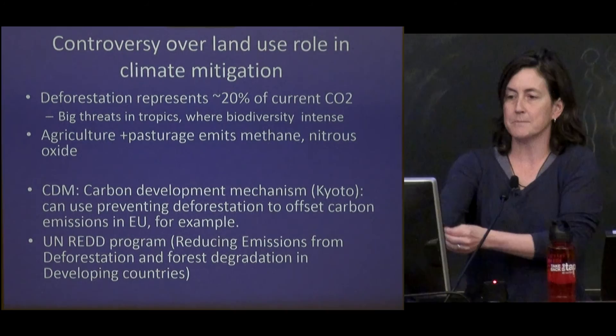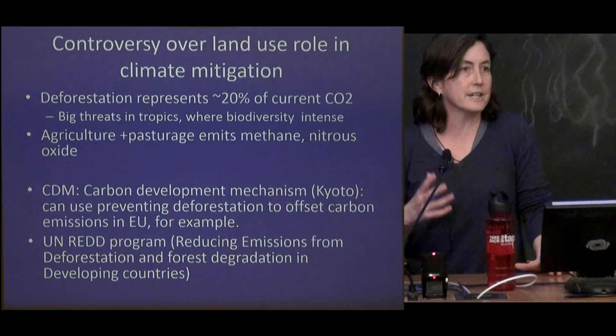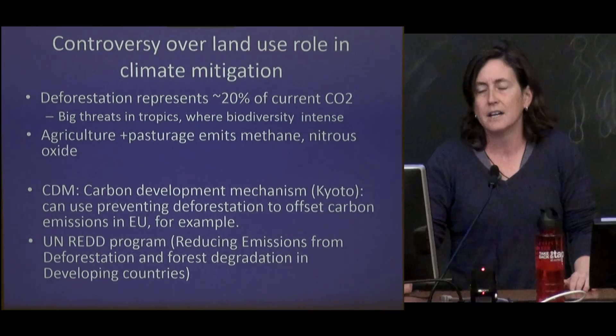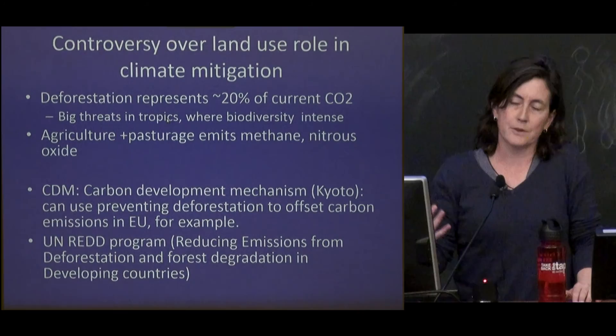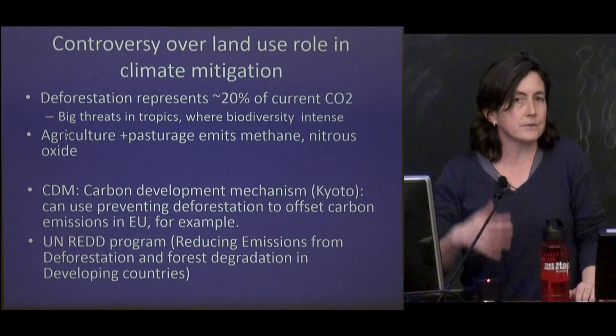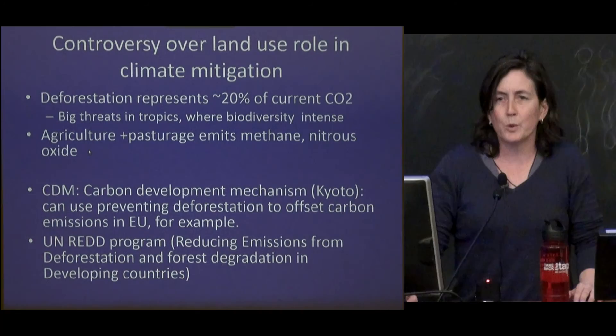Most of the time we think about climate change as being driven by energy, and I think that's an accurate assessment. But one interesting thing we became interested in a few years ago is the controversy over the role of land use, agriculture, and deforestation in climate change and climate mitigation. Deforestation represents about 20% of the current elevated CO2 concentrations from anthropogenic activity, as well as emissions in that range. There's also the threat of continued and enhanced deforestation, especially in the tropics, where people are really interested in biodiversity. In agriculture, there's quite a bit of emissions of other greenhouse gases like methane and nitrous oxide.